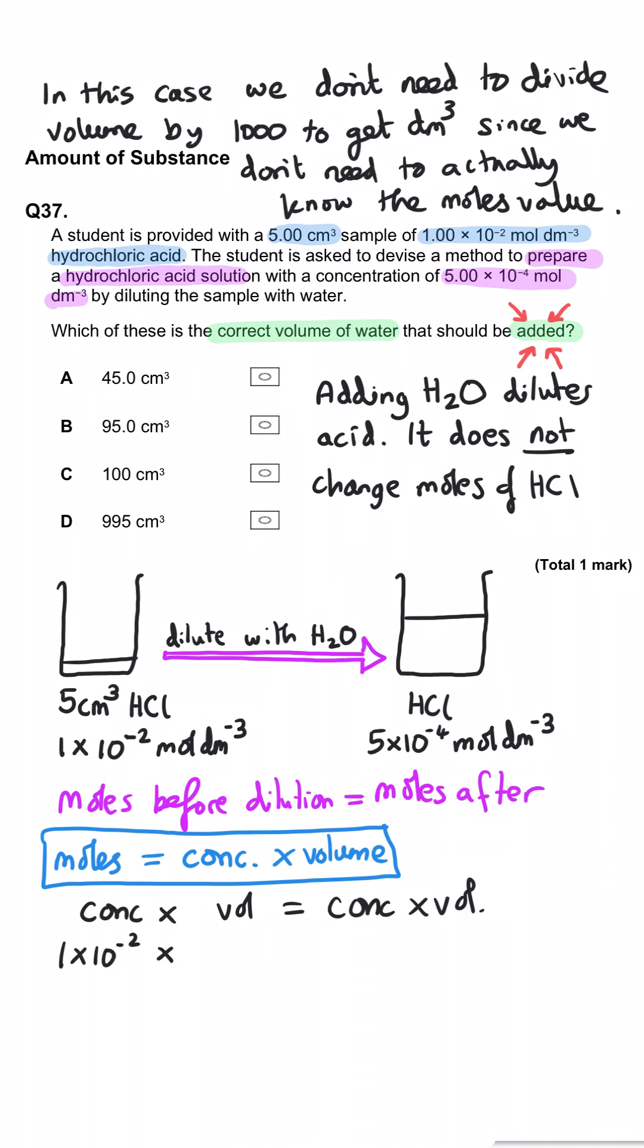And since moles is concentration times by volume, what we can say is concentration times volume before will be equal to concentration times volume after. So when we do 1 times 10 to the minus 2 multiplied by 5, that's equal to 5 times 10 to the minus 4 multiplied by whatever the final volume is going to be. When we rearrange that and crunch the numbers, we find that the final volume will be 100 centimetres cubed.